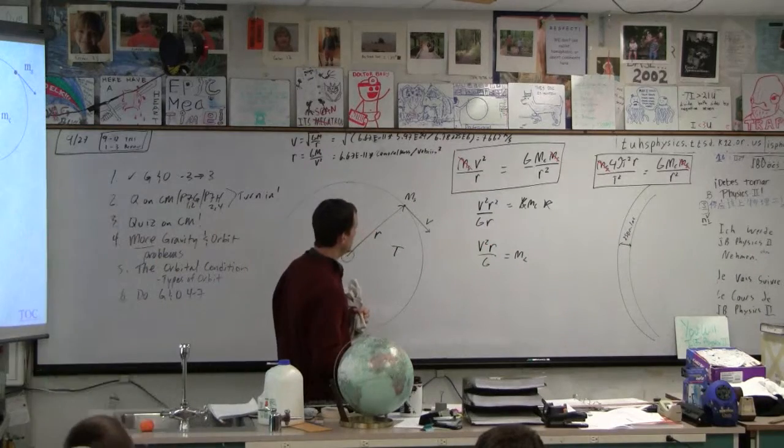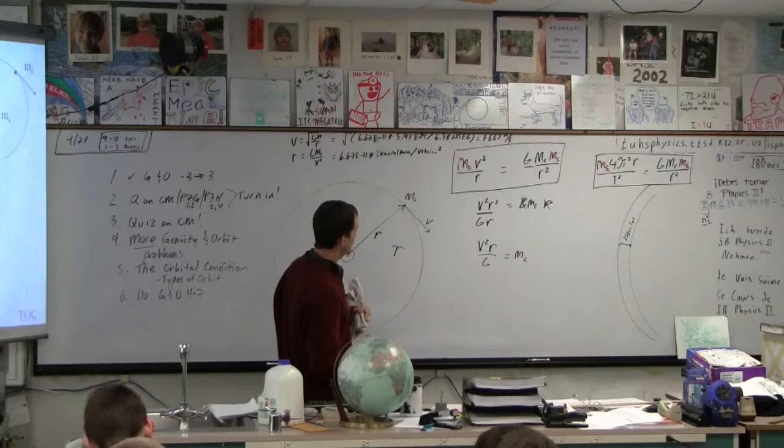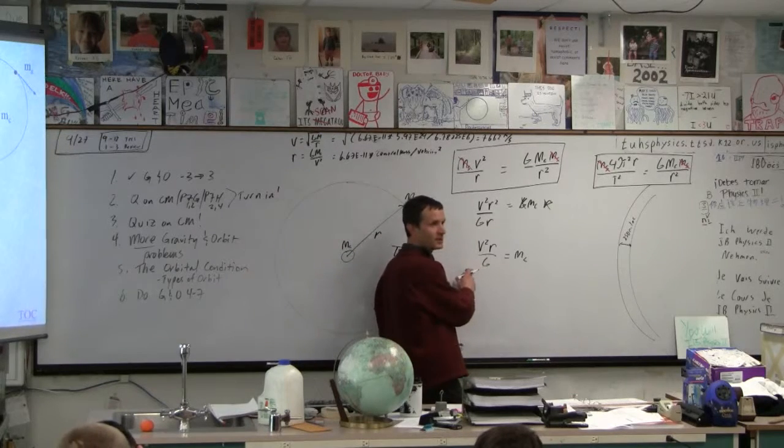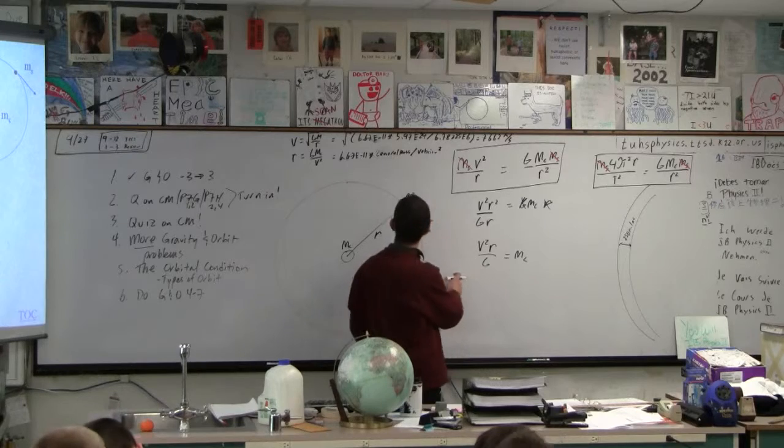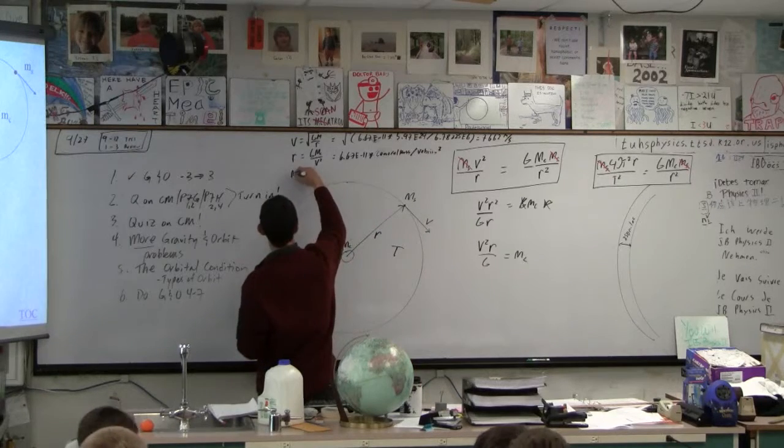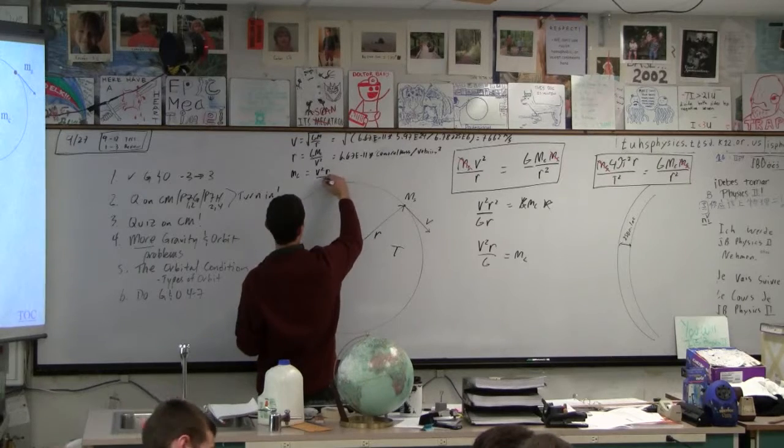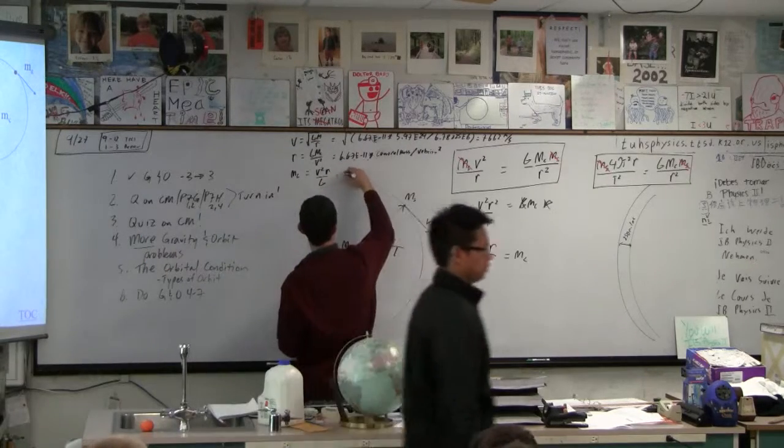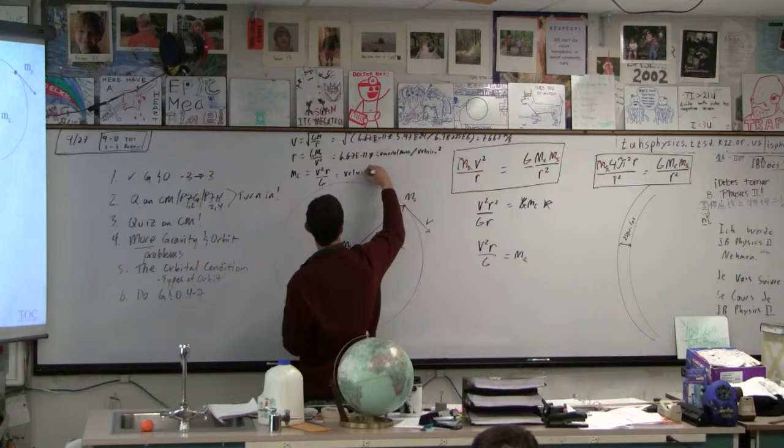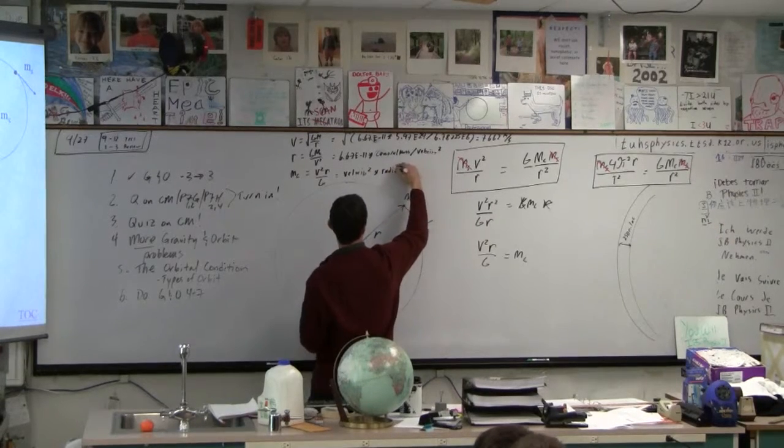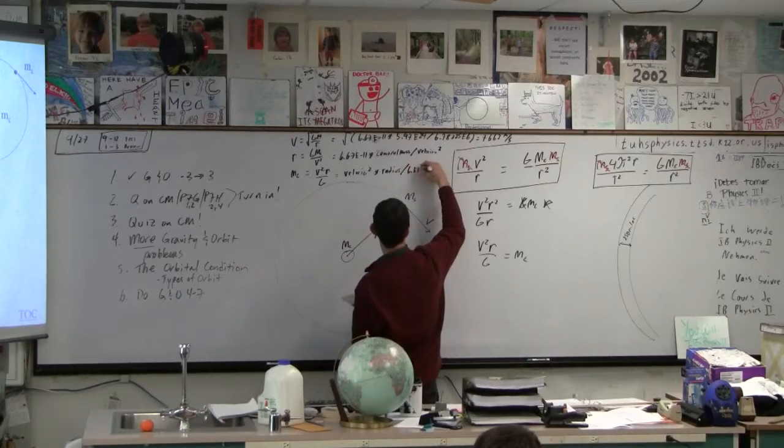So let me know if I made a mistake. Is this right? This looks right, doesn't it? Okay, so Mc is V squared R over G. So that's going to look like velocity squared times radius divided by 6.67.